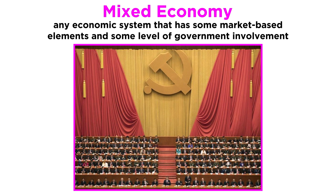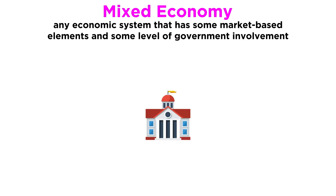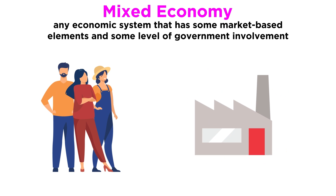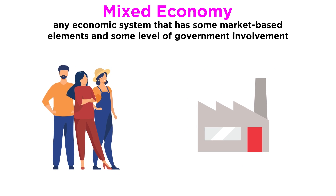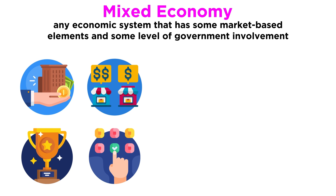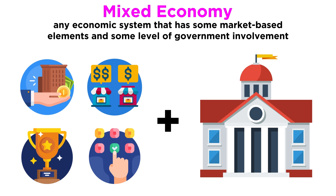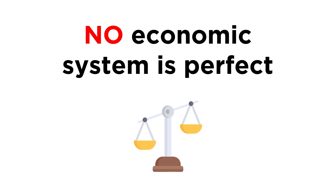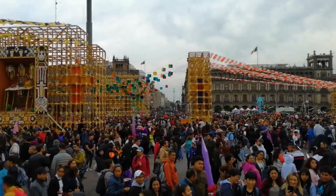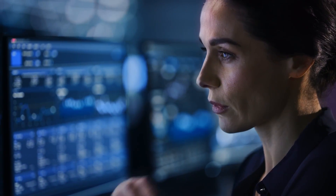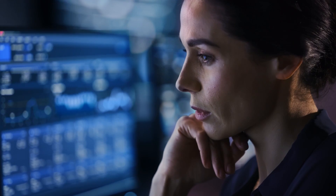Finally, a mixed economy is a combination of the other three economies. Sometimes the government steps in to guide the factors of production; sometimes it's individuals and businesses; sometimes it's even based on traditional values. Generally, it's any economic system that has some market-based elements and some level of government involvement. It's also the most common type of economy around the world. In conclusion, every society has different values, and those values ultimately determine how much influence governments should have in an economy, which is a major factor in determining social dynamics.